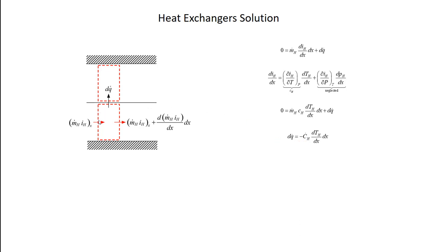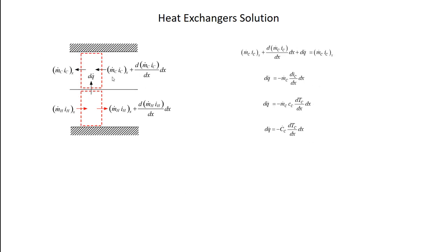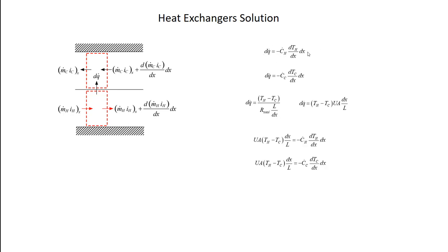I do the same thing on the cold fluid. I'm careful about the sign because the cold fluid is flowing in the negative X direction. Enthalpy enters at location X plus DX, leaves at location X, and DQ-dot enters. Going through the same steps, I end up with the corresponding differential equation. So I have two differential equations: DQ-dot is related to the temperature change of the hot fluid, and the same DQ-dot is related to the temperature change of the cold fluid.